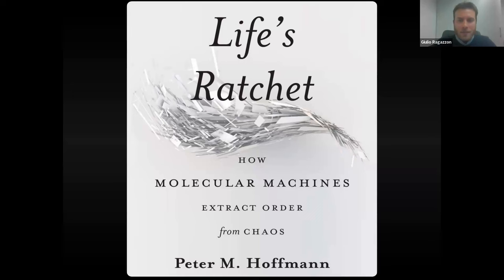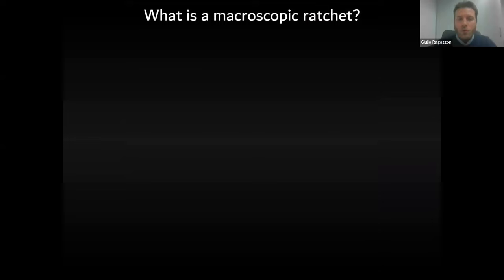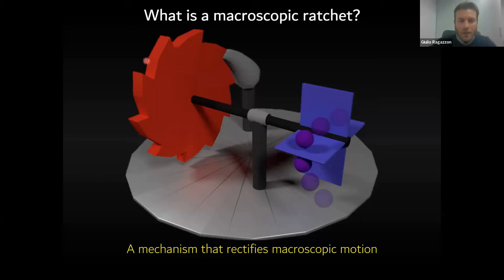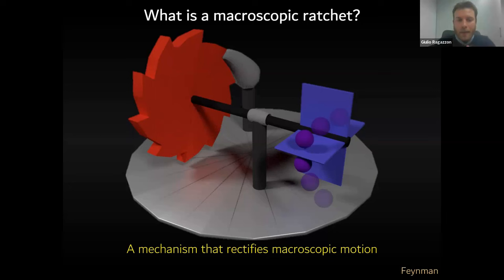What is the meaning of that sentence? I'll arrive there bit by bit, starting from what a macroscopic ratchet is. A macroscopic ratchet is a mechanism that rectifies macroscopic motion. Here we have a ratchet and a ball — when the ball bounces on one side, we can have rotation in one direction; when it bounces on the opposite side, there cannot be unidirectional rotation. Feynman popularized this mechanism and noted that if we just shrink down these mechanisms, it's not possible anymore to have directionality using the same principles, because the shape of the barrier doesn't matter anymore — it's the height of the barrier which matters.